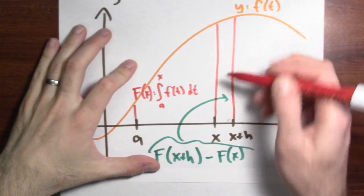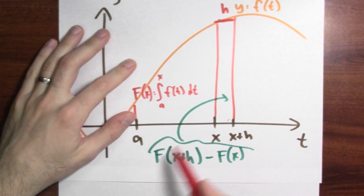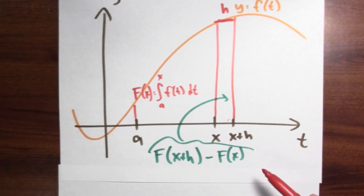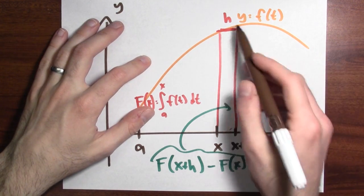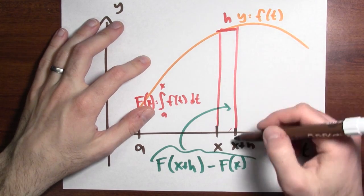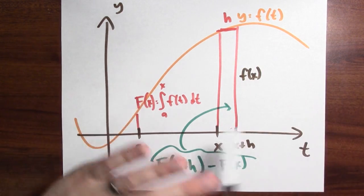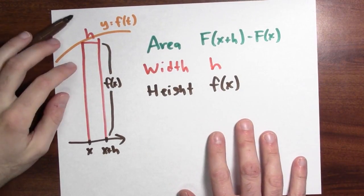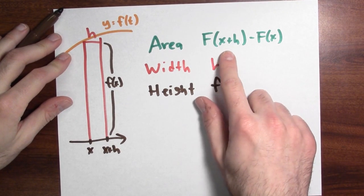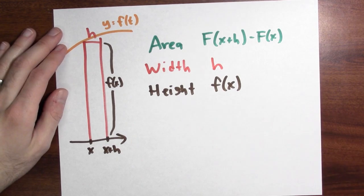I mean, this region is not quite a rectangle, but it's awfully close to a rectangle of width h and area F(x + h) minus F(x). Remember, my goal was to differentiate the accumulation function. And all I've got is this rectangle whose width is about h and whose height, you know, you think about it, it's about f(x). So what's up with this rectangle?